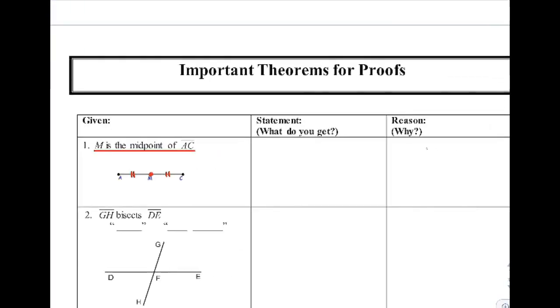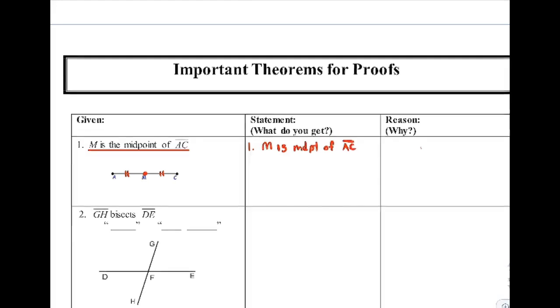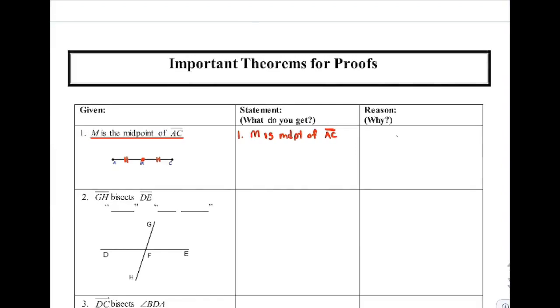So that allows us to make two statements. Statement number one is repeating what it told us: M is the midpoint of AC. Do yourself a favor and abbreviate appropriately wherever you can to save yourself some writing. So that's statement number one.